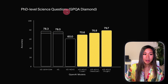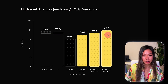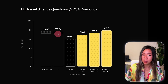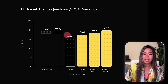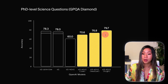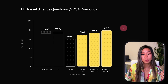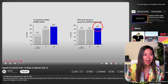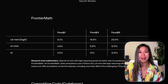Next benchmark: the PhD level science questions. Here the range is a lot smaller and also on par with the O1 full model. As there is a performance gap between the O1 mini and the O1 full, the O3 mini will also have a performance gap with the O3 full — specifically 87.7, as shown in their announcement video.